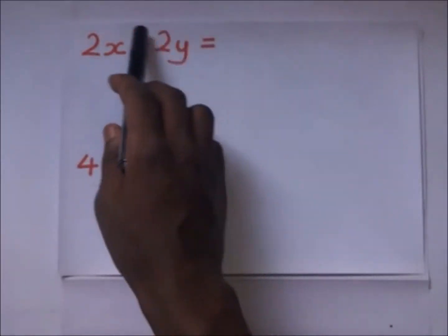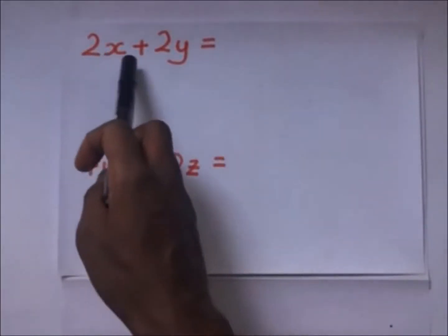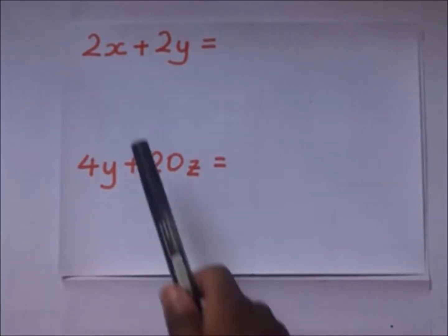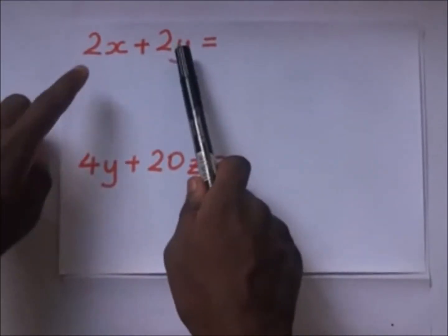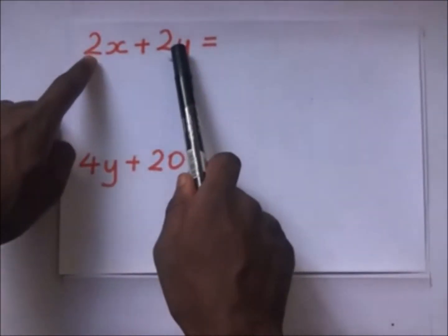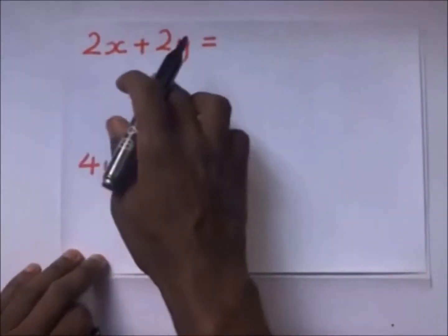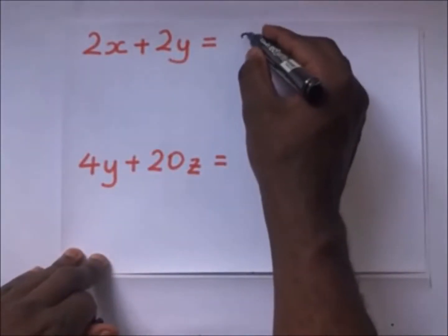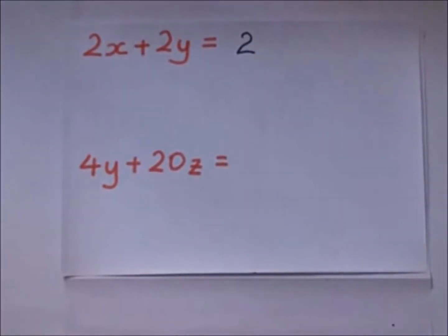Looking at this algebraic expression: 2x plus 2y. If you look at 2x and then 2y, the highest common factor between them is 2. So you put 2 outside the brackets.